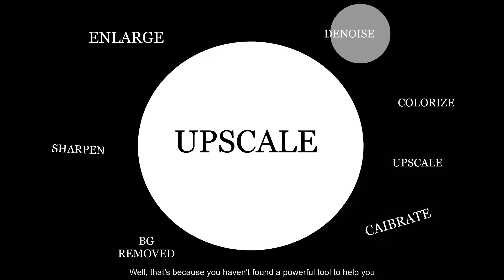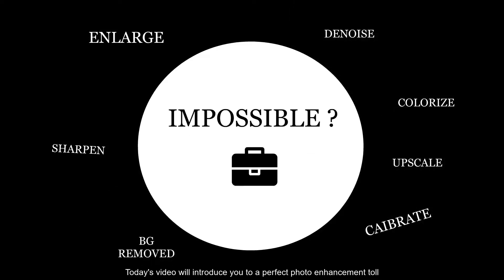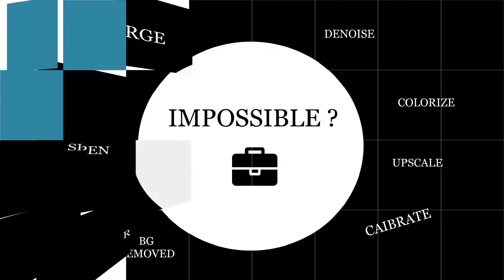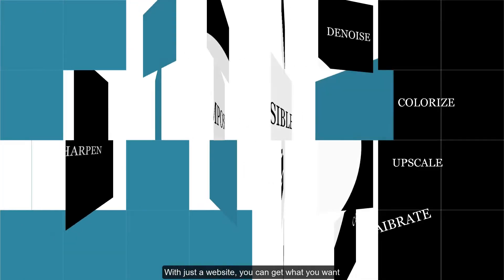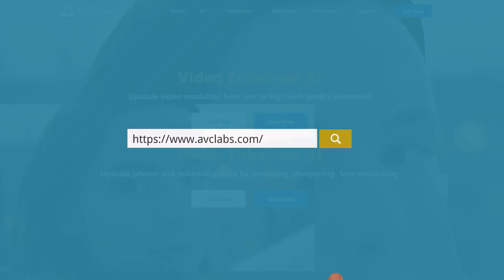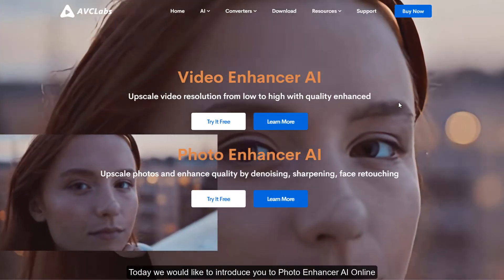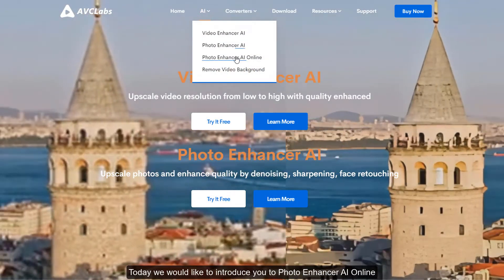Well, that's because you haven't found a powerful tool to help you. Today's video will introduce you to a perfect photo enhancement tool. You don't need to download any program. With just a website, you can get what you want. Type avclabs.com on your browser and search it. Today we would like to introduce you to Photo Enhancer AI Online.